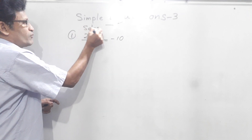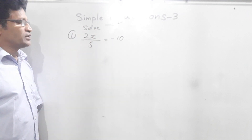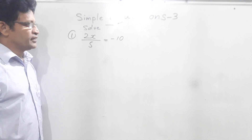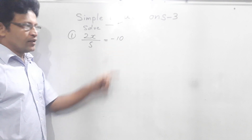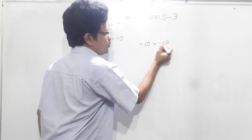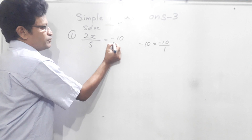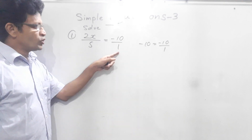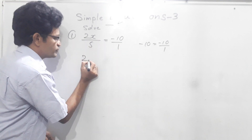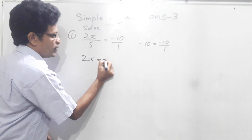Take your solve. How we are going to do this question? You can do the cross multiplication. Minus 10 means actually minus 10 over 1, so we can write 1 here. Now we can do the cross multiplication. 1 into 2x is 2x, equal 5 times minus 10 is minus 50.